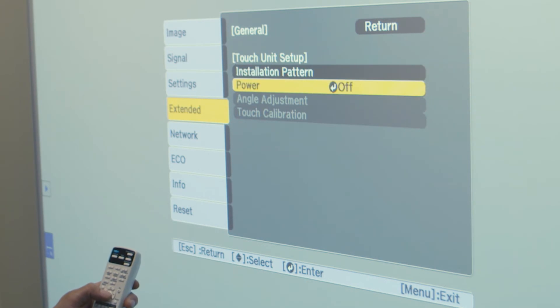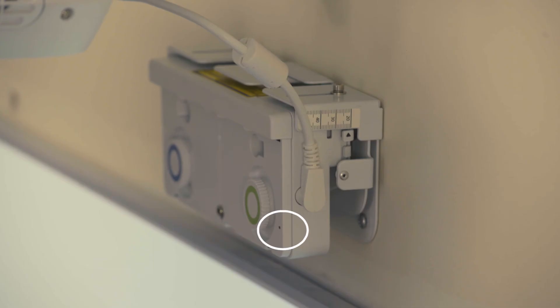Next, go into Power and click On. You will see the blue light on the touch module illuminate once it is turned on.